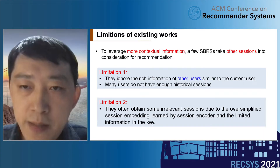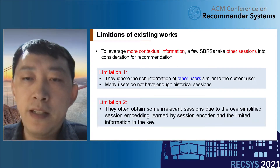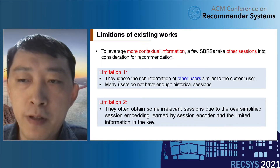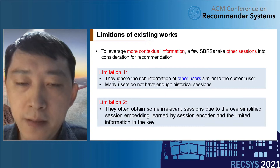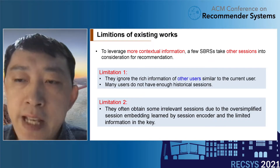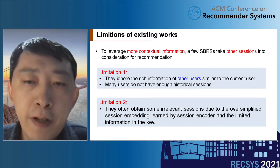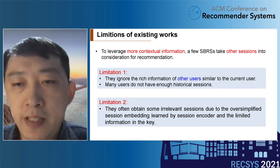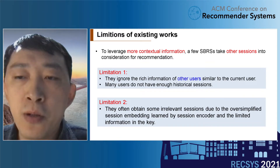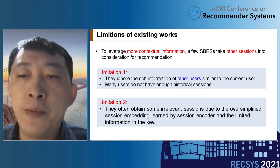Other existing methods first represent the current session with a session embedding produced by a session encoder, then use that embedding as a key to retrieve a few other sessions from the whole dataset, and finally use the items in those sessions as a reference for recommendations. However, they often obtain irrelevant sessions due to the oversimplified session embedding and encoder, with simple similarity calculations under limited information.